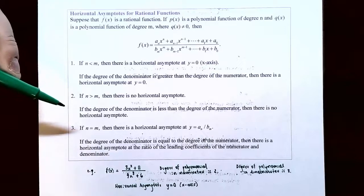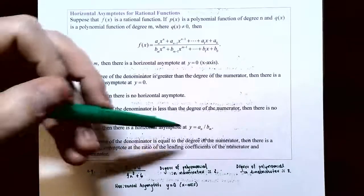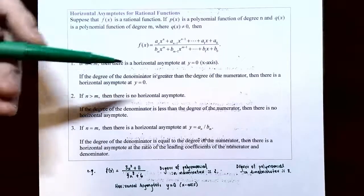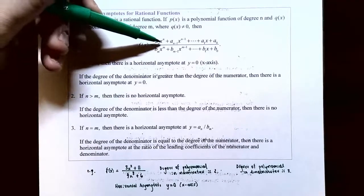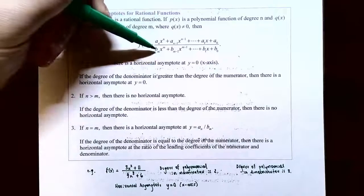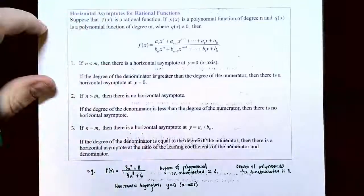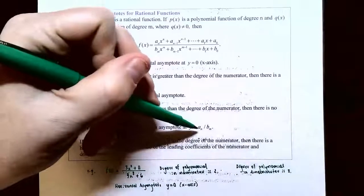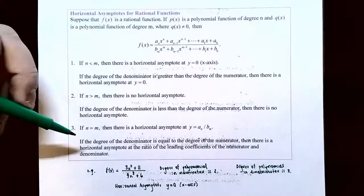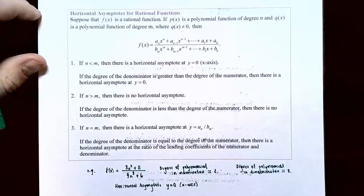Case three: if n equals m — the degrees of the numerator and denominator are the same — then a horizontal asymptote exists and its equation is y equals the ratio of the leading coefficients: y equals a sub n divided by b sub m. On the far ends of the graph, the graph levels out towards this ratio.